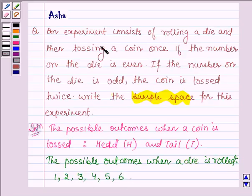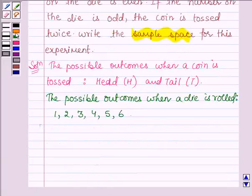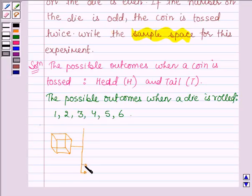Now, we are given that a die is rolled first. Suppose this is the die which is rolled. The possible outcomes are 1, 2, 3, 4, 5, and 6.